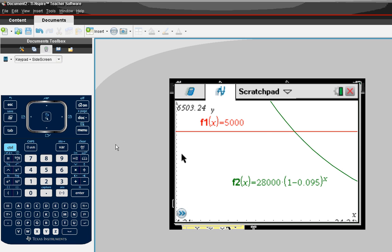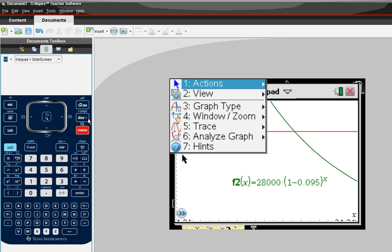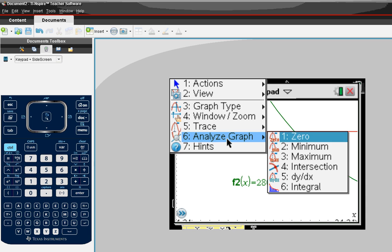Now we just look for the intersection by going to menu, analyze graph, and intersection.